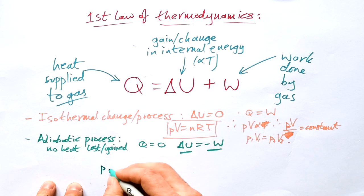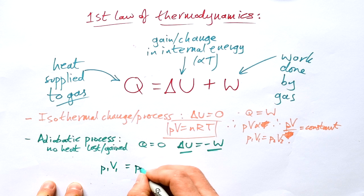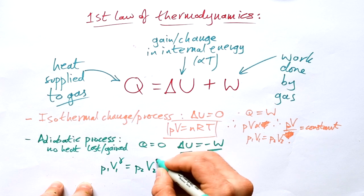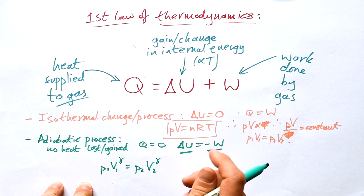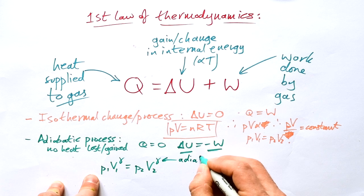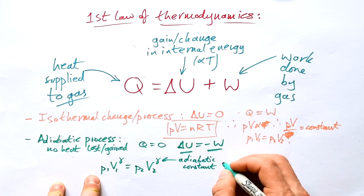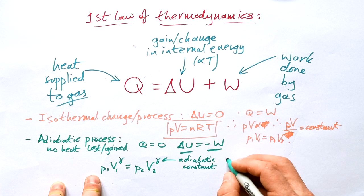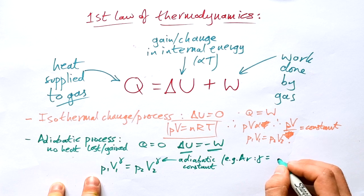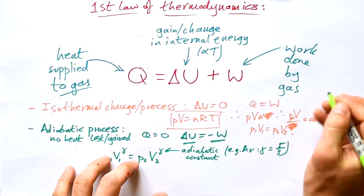Now for this one we can also say that P1V1 is equal to P2V2. However, we have this little thing here that we raise the power of the volume by. This is called the adiabatic constant. And you'll always be told what that is. That changes from gas to gas. For a monatomic gas, let's say argon, that's equal to five thirds.